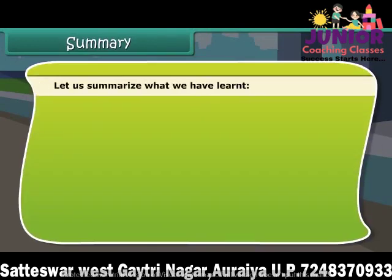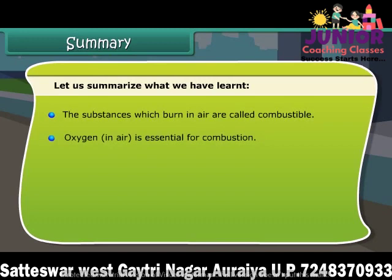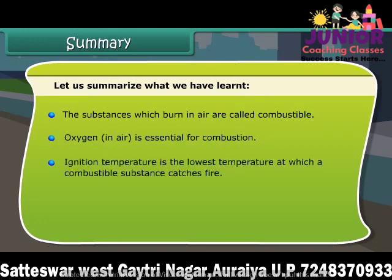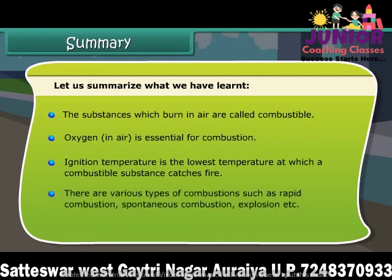Let us summarize what we have learned. The substances which burn in air are called combustible. Oxygen in air is essential for combustion. Ignition temperature is the lowest temperature at which a combustible substance catches fire. There are various types of combustion such as rapid combustion, spontaneous combustion, explosion, etc.